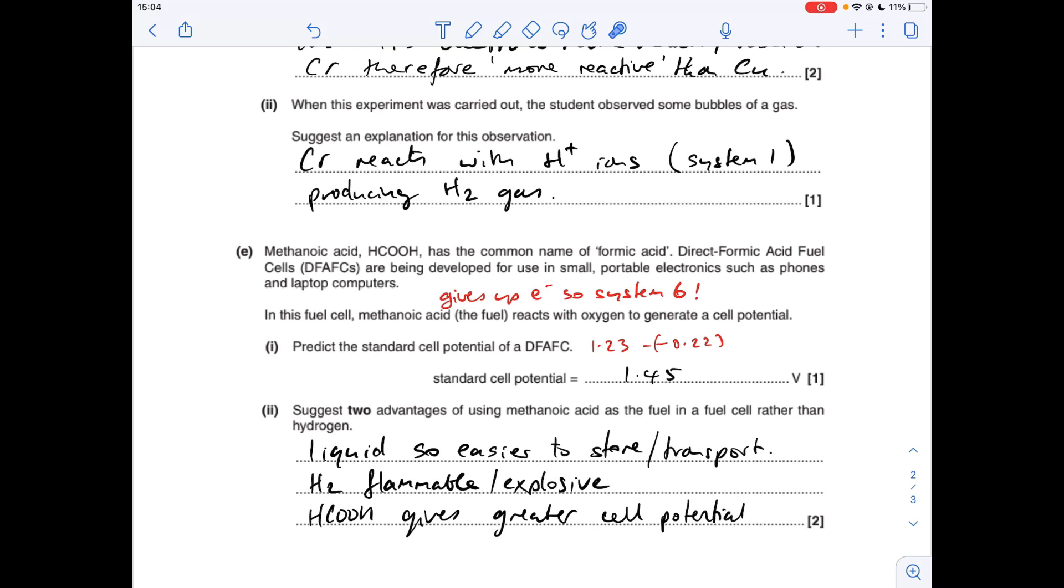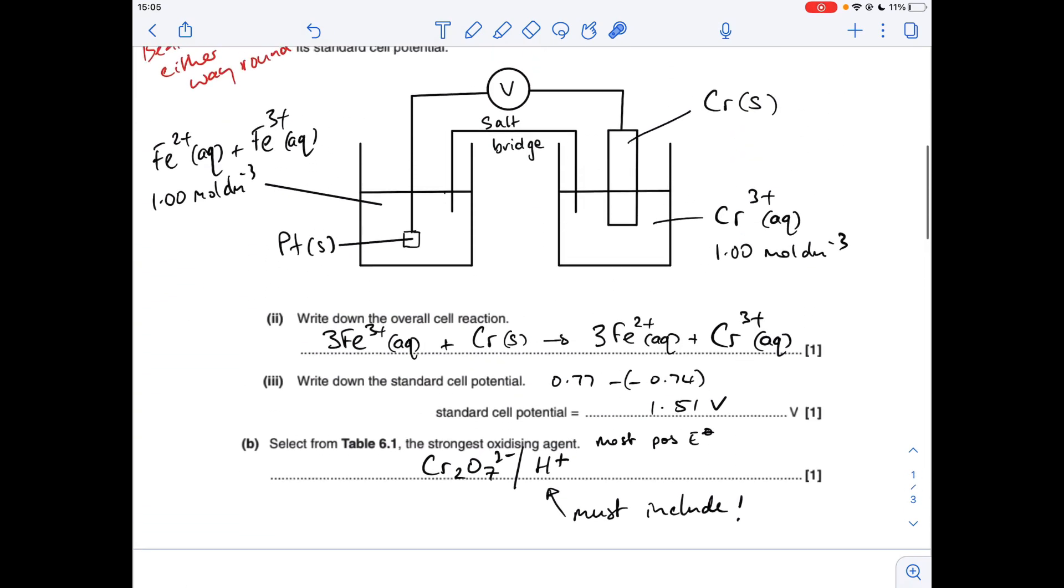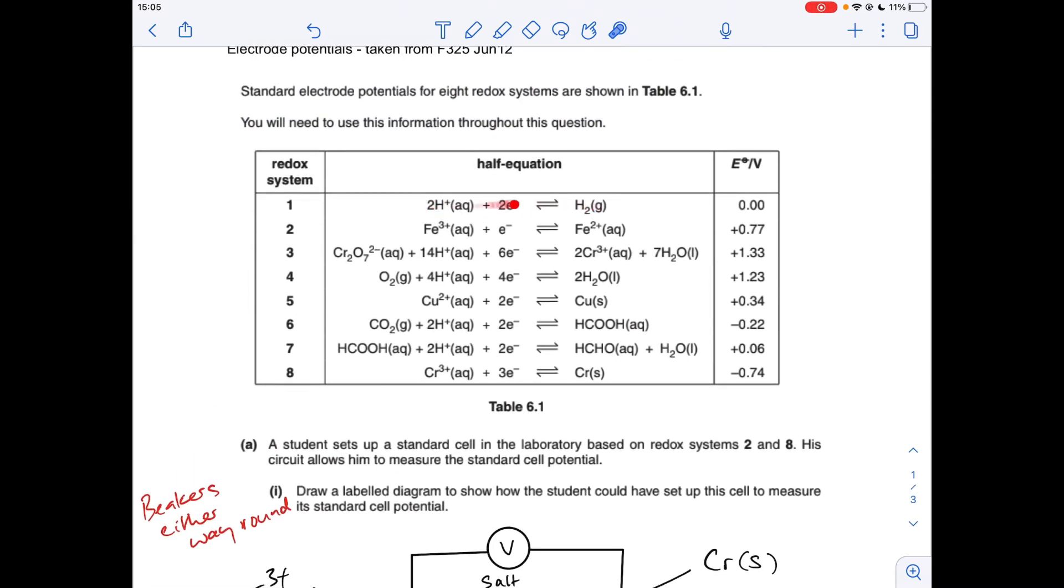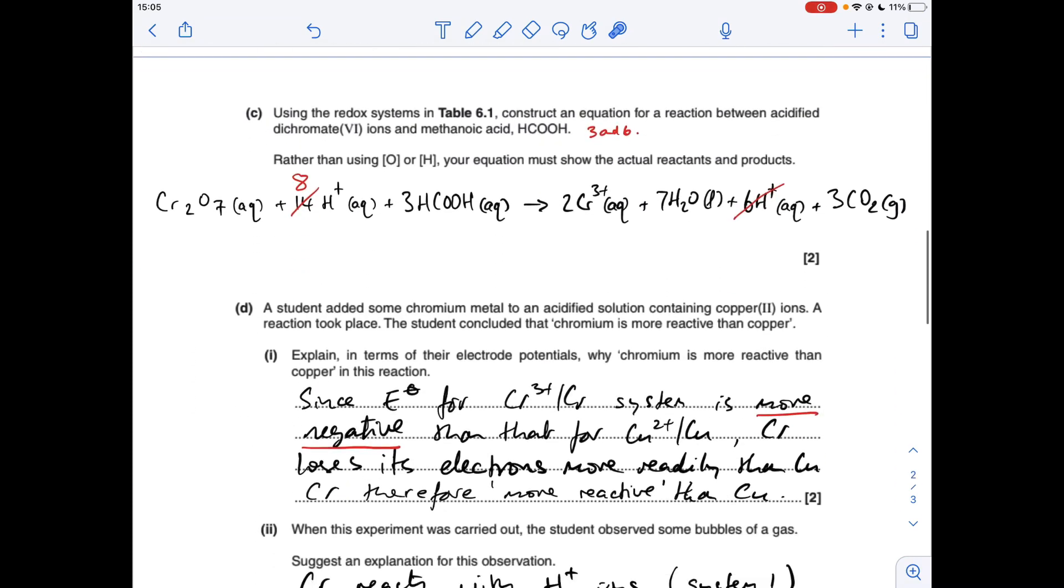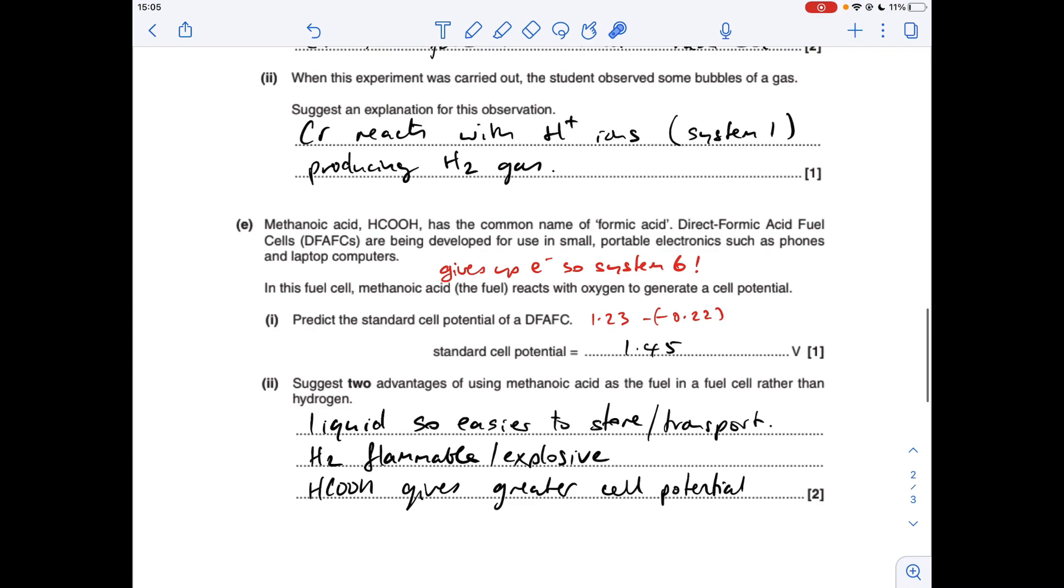And finally, two advantages of using methanoic acid as the fuel in a fuel cell rather than hydrogen. Here's three I came up with. So hopefully you've got a couple of these. Obvious one is methanoic acid is much, much easier to store or transport than hydrogen. Remember, hydrogen has to be stored under very, very high pressure. It's difficult to store and transport. Hydrogen is also extremely flammable, explosive, whereas methanoic acid isn't. So that's an advantage of methanoic acid. Finally, you could have said that methanoic acid gives a greater cell potential. So use the fact that you've just calculated in the first bit of the question, the cell potential is 1.45 volts. If it had been the hydrogen fuel cell, just go back to these. So hydrogen fuel cell uses this half equation and this one, you can see you'd get a voltage of 1.23 volts. So obviously the methanoic acid generated a higher voltage, so you could say that that was an advantage of that type of fuel cell.